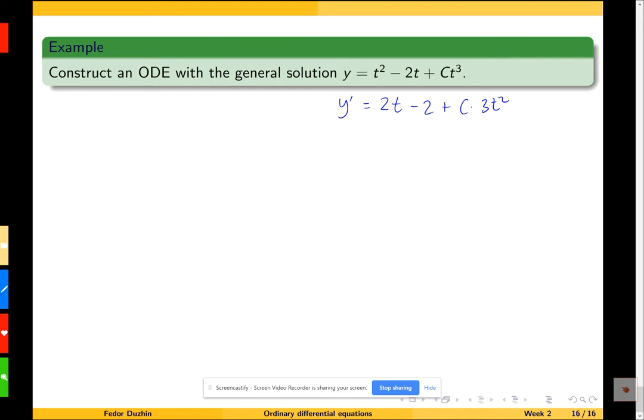In order to get a differential equation, we need to exclude C from these two equations. There is no universal rule to do it, so we just have to do it on a case-by-case basis.